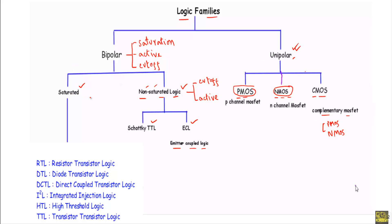Now let me show you the classification of saturated logic. In saturated logic, we have various categories: RTL (resistor-transistor logic), DTL (diode-transistor logic), DCTL (direct-coupled transistor logic), I²L or integrated injection logic (also known as IIL), HTL (high threshold logic), and TTL (transistor-transistor logic). TTL is the most widely used logic family, with applications in the 74xx IC series.